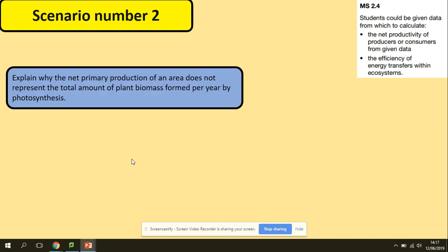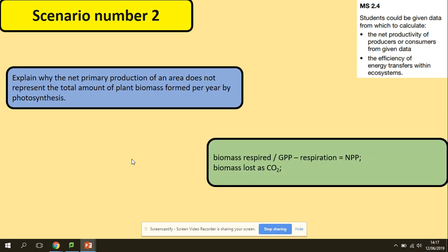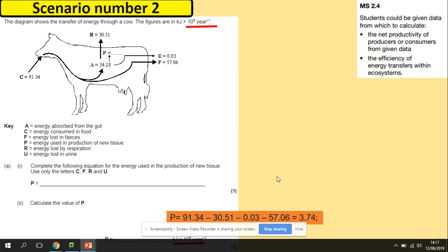Another skill here, you've got to explain why the net primary production of an area does not represent the total amount of plant biomass formed per year by photosynthesis. What we need to remember about the biomass is that it's nothing else than we're going to lose energy for respiration, so providing the equation is good enough. The biomass is lost as carbon dioxide because this is what you're going to breathe out.